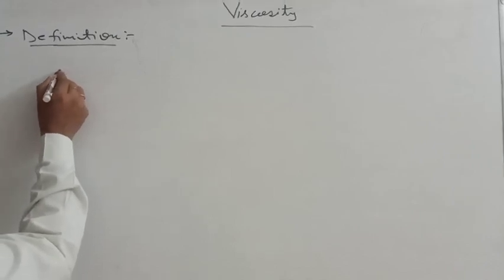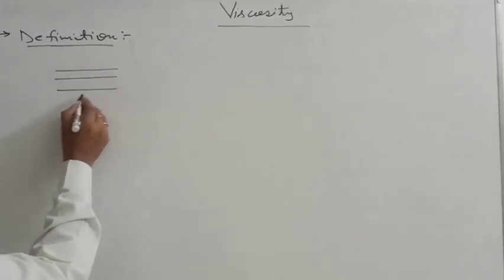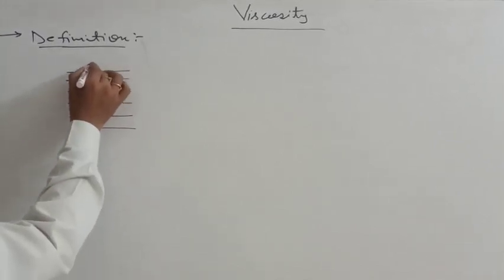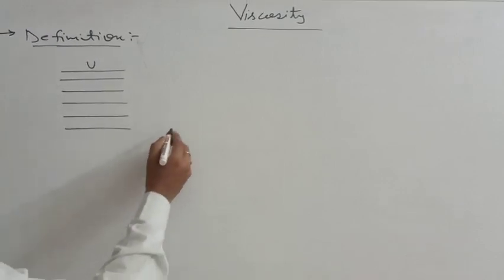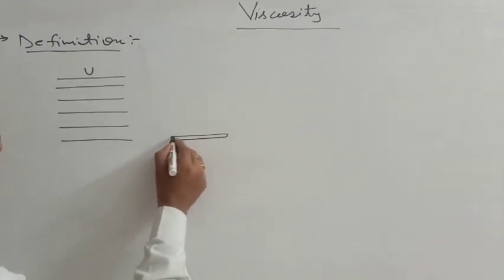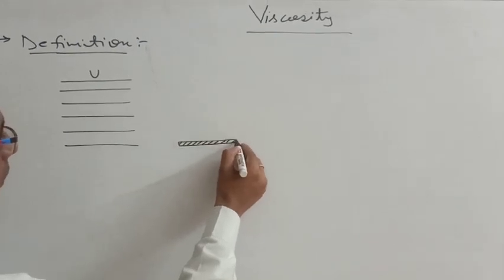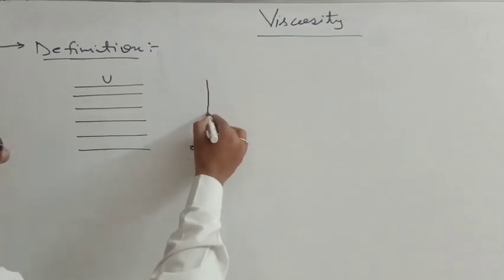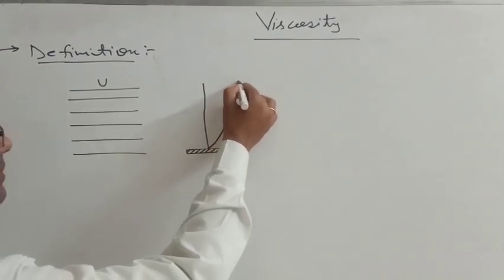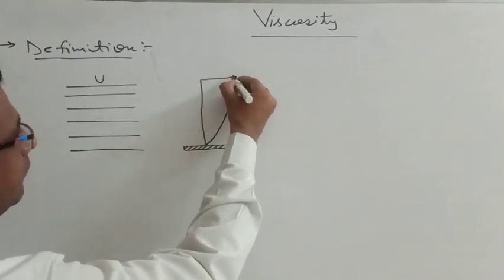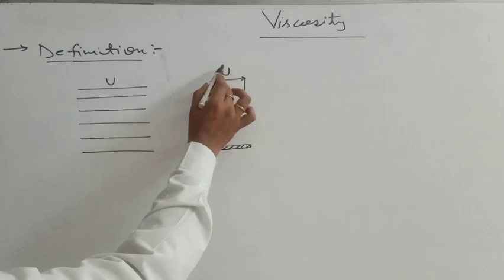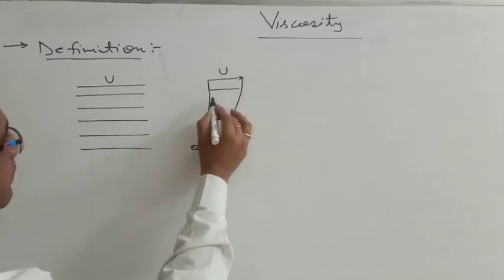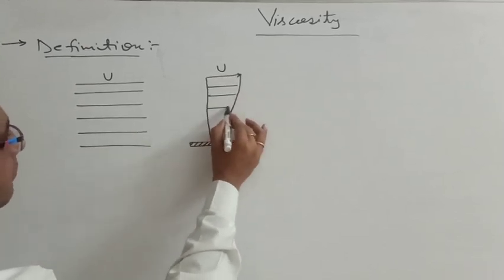Let us consider that the fluid is moving in layers, just like playing cards. The fluid is moving and having some velocity, u-velocity. If you are putting some obstacle — a plate is there which has zero velocity, or is stationary — then the velocity profile along this plate is like this. This is the velocity profile of this flowing fluid. The uppermost layer has the maximum velocity. Considering different layers, these layers have different velocities.